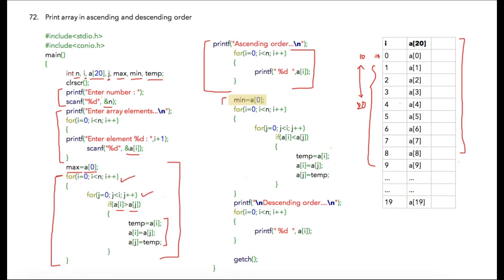I'm initializing min with a[0], then I'm writing two for loops i and j. I'm going to check the condition if a[i] is less than a[j], then we will swap those two array elements. Once this for loop gets completed, we have our array elements in descending order. With this code, we will print all the array elements.